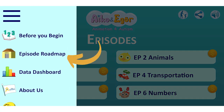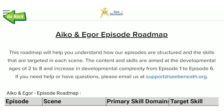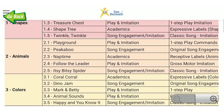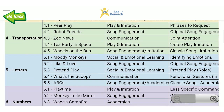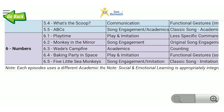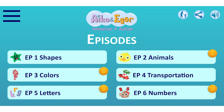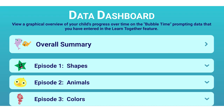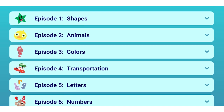Number two: Click Episode Roadmap to see a color-coded reference page and to learn about which skills appear in which episodes and chapters. All children benefit from practicing different types of skills, and the Episode Roadmap enables caregivers, therapists, and teachers to individualize the learning experience to each child's specific needs. Number three: Click Data Dashboard to see where a child's data will be stored when you use the Learn Together function.